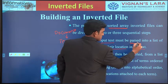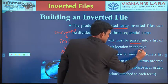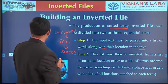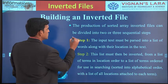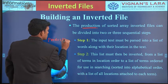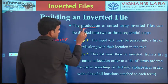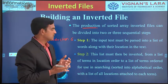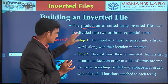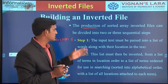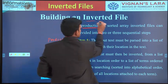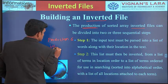The input text must be parsed into a list of words along with their location in the text. For example, the word 'production' is present as the sixth word in the text. Each and every word has to be parsed and its location noted. In this particular document you might have repeated words — for example, 'inverted' is present as the third word and also as the tenth word.